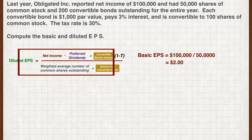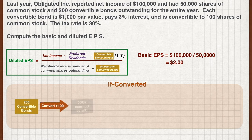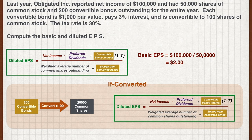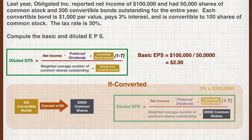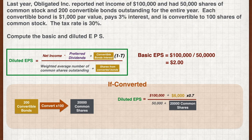To calculate the diluted EPS, let's change the scenario to the if-converted scenario. The 200 convertible bonds are converted at the beginning of the year. Each bond is converted to 100 shares of common stock, giving us an additional 20,000 common shares for the year — this is added to the denominator. At the numerator, we add back the interest payment that would not be paid if the bonds were converted: 3% of $200,000, multiplied by (1 minus the 30% tax rate), giving an after-tax income addition of $4,200. Plugging in the figures, we get a diluted EPS of $1.49.